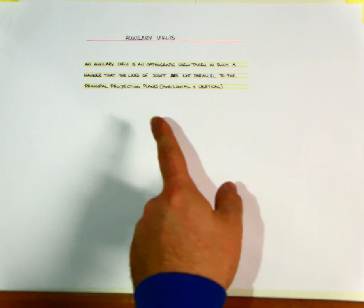Okay, so auxiliary views. First of all, what is an auxiliary view? Because to be able to draw it properly, I think we need to fully understand it. So I just have a definition of it here. An auxiliary view is an orthographic view taken in such a manner that the lines of sight are not parallel to the principal projection planes. Now that sounds a good bit confusing, but if I were to mention horizontal and vertical planes, it might make a little bit more sense to you.